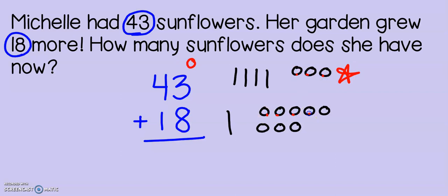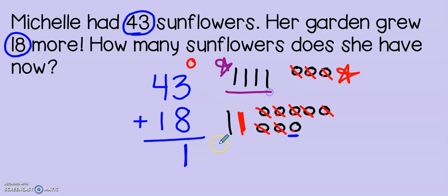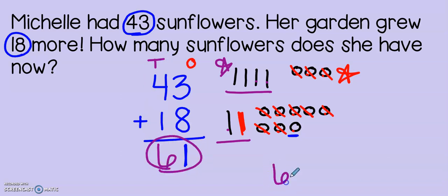Just like on our other problems, we start by adding up the 1s: 1, 2, 3, 4, 5, 6, 7, 8, 9, 10, 11. Can I make a new 10 if I have 11? Yes, I can. 1, 2, 3, 4, 5, 6, 7, 8, 9, 10. I crossed them out and made my new 10. How many 1s do I have left, second grade? Just one. So I put my 1 under the 1s column. Now I go over and count all of my 10s: 1, 2, 3, 4, 5, 6. I have 6 tens. So 43 plus 18 gives me 61. And as always, when I do a story problem, I look for my label. My label is sunflowers. I always look back at my problem to help me find my label.